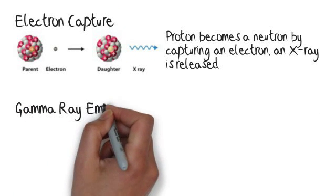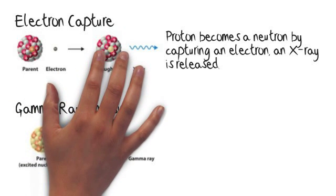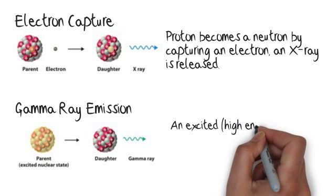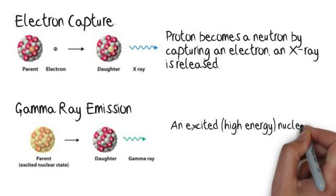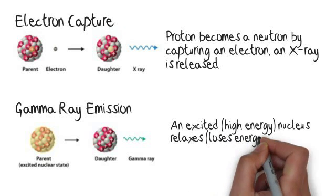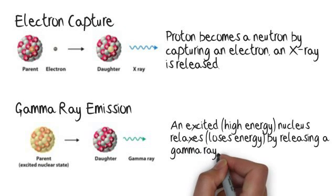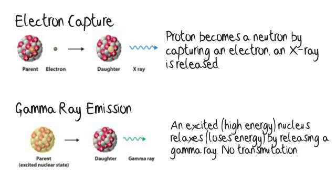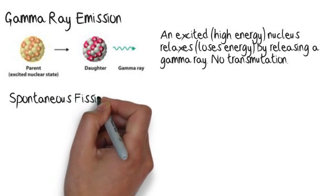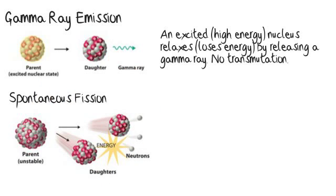Then we have gamma ray emission, where we have no change in the identity of the element. We just have a really high-energy nucleus that has been given an extreme amount of energy. The most common form for this type of nucleus would be in a supernova, where a star explodes. And what happens is it's just so high in energy, it relaxes or releases energy in the form of gamma radiation.